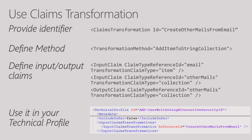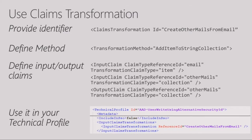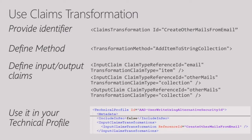The transformation method will show up as a method from a predefined list. Right now the starter pack is your best documentation for that, but we will make it public. The input and output claims of every transformation method are also fixed — it's not a guess. For every method, it is known how many input claims are required and what their transformation claim types are.